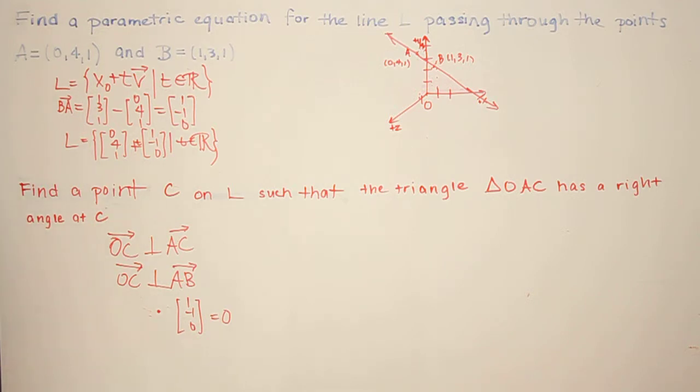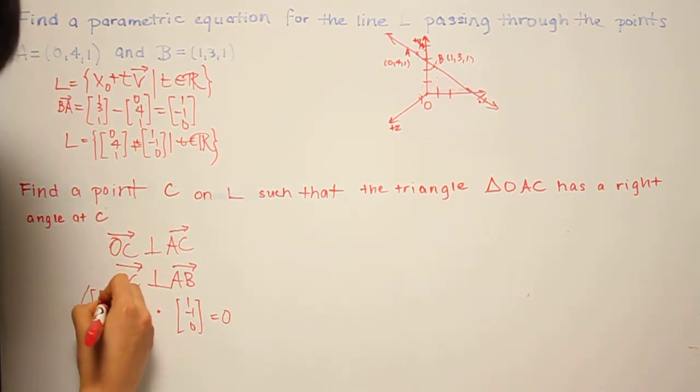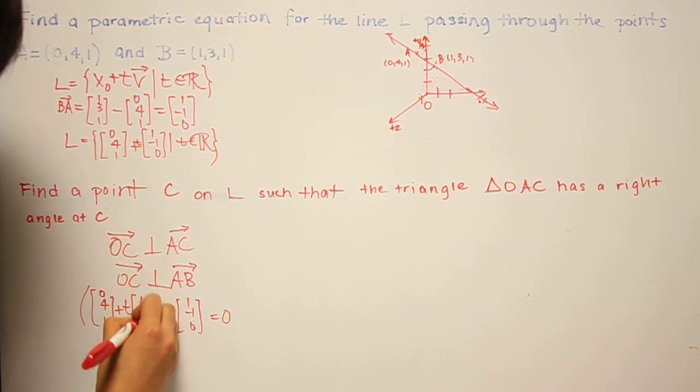Now, since C is a point on L, we know that C is some point of the form that we calculated in the first part. So it must be (0, 4, 1) plus some constant times (1, -1, 0).